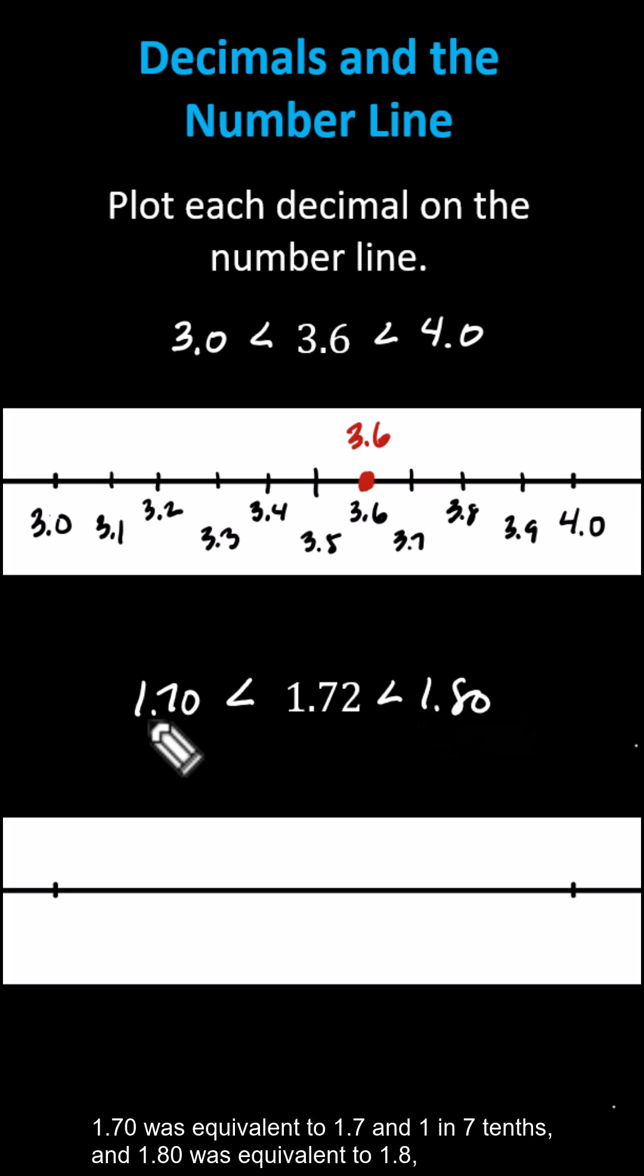1.70 is equivalent to 1.7 or 1 and 7 tenths, and 1.80 is equivalent to 1.8 or 1 and 8 tenths. But we'll go ahead and label the left side of the number line as 1.70 or 1 and 70 hundredths.